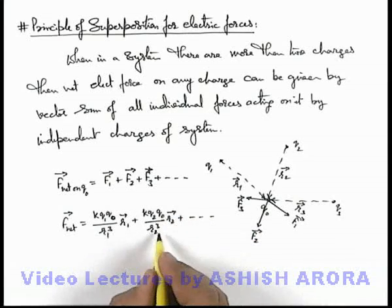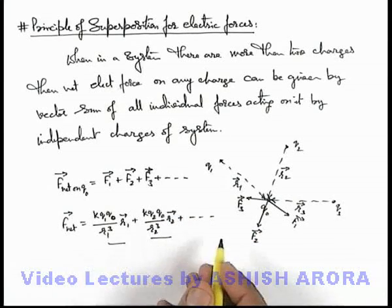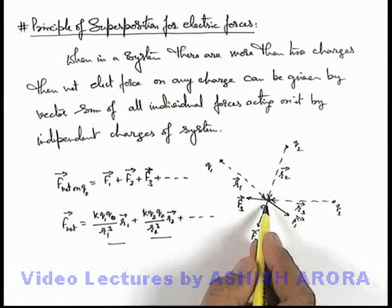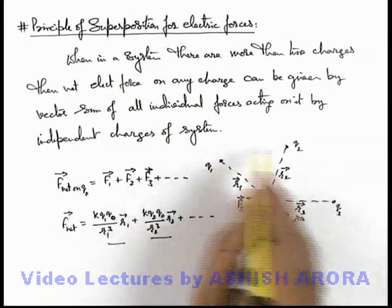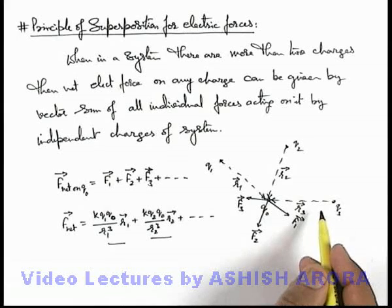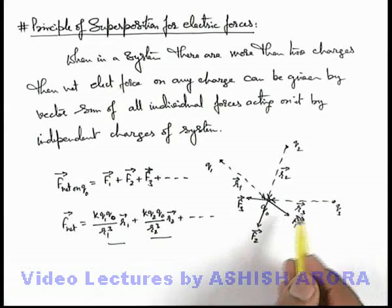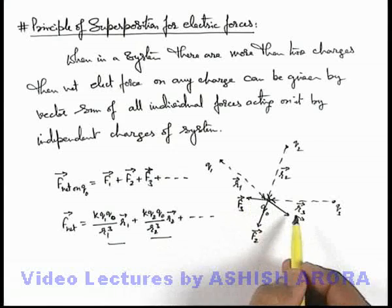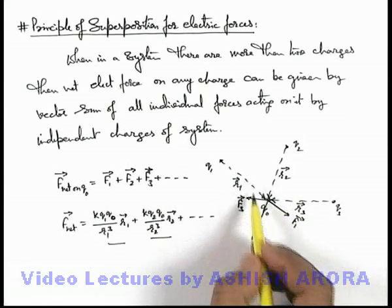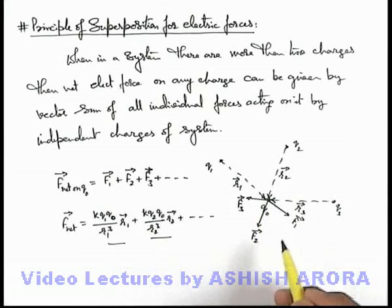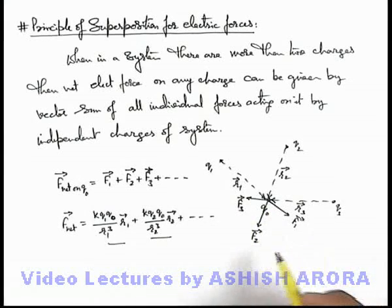Here I am using the vector form of Coulomb's law we already studied. This is the way we can find out the net force acting on a charge particle due to all the other charges present in the surrounding. For numerical application, it is always easier to resolve all these forces into 2 mutually perpendicular components, and by using standard unit vectors we can calculate the resultant force. We'll see the same calculation in various numerical examples also.